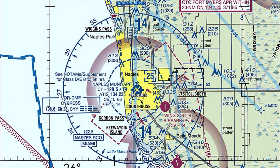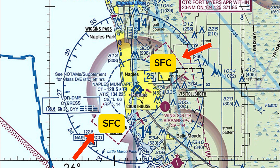Next we'll look at class echo extensions, also depicted by dashed magenta lines on sectional charts. They have a kind of rectangular shape and are usually connected to class deltas. They are specifically designed to protect the arrival and departure corridors for IFR traffic aligned with a specific runway that has an instrument approach or departure procedure. Similar to surface areas, extensions start from the surface and extend all the way up to but not including 18,000 feet — meaning you'll remain in class echo airspace the whole time.